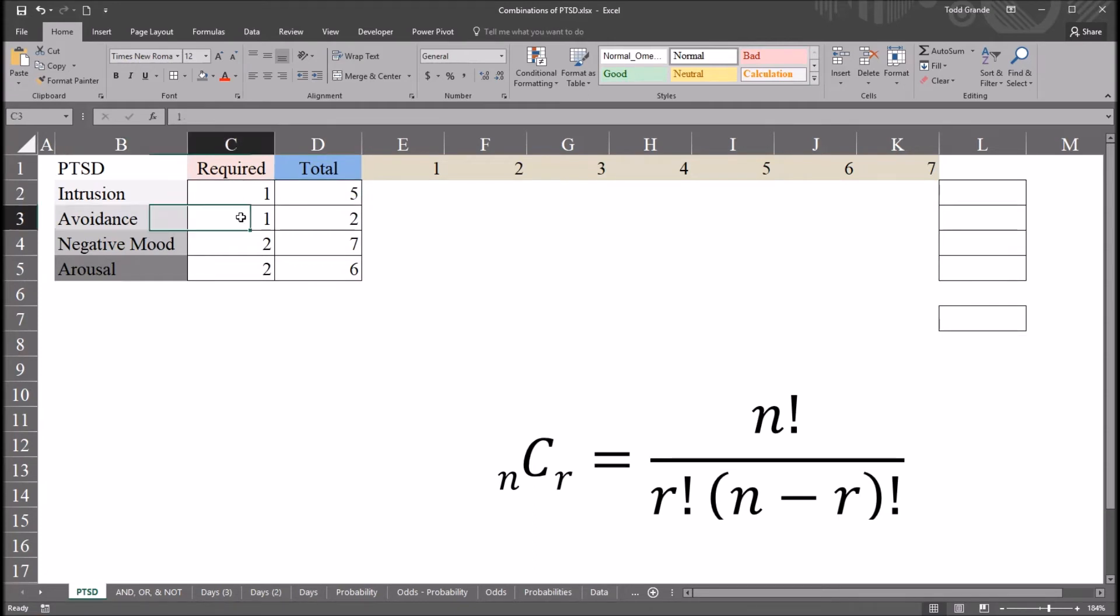For avoidance, we have the same thing. One symptom is required, except here we only have two. So you have one required and two total. And then in negative mood, we have two that are required, a minimum of two out of seven, and arousal two out of six. When we calculate all the possible combinations for intrusion, avoidance, negative mood, and arousal, we have to multiply them together to get the total number of potential post-traumatic stress disorder definitions.